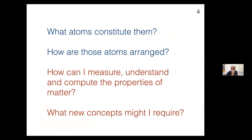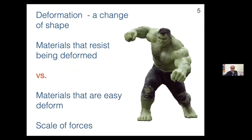More for this particular talk, one can broaden this question and ask what new concepts must I require in order to understand the structure of different types of matter and materials? Behind everything I will talk about is the idea of deformation, a change of shape. We can draw a contrast between materials that resist being deformed versus materials that are easy to deform. This depends upon the scale of forces — if you have a Hulk-like scale of forces, it's much easier to deform materials.